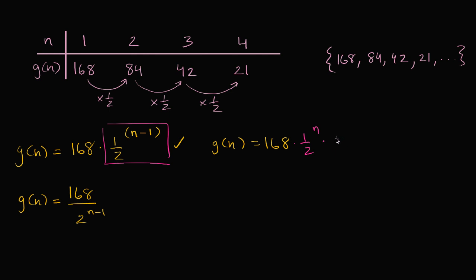So this is times two. So we could rewrite this whole thing as 168 times two is what, 336, I'd do that right, 160 times two would be 320, plus 16, two times eight, so yeah, 336, and then times 1 half to the n.